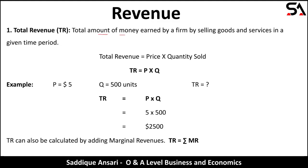Total revenue is the total amount of money earned by a firm by selling goods and services in a given time period. The formula to calculate total revenue is price multiplied by quantity sold. So if price is $5 and quantity is 500, then 5 multiplied by 500 equals $2500, which is total revenue.